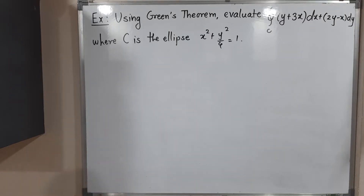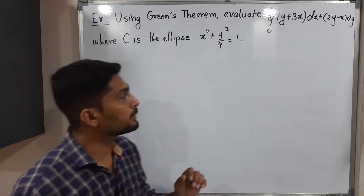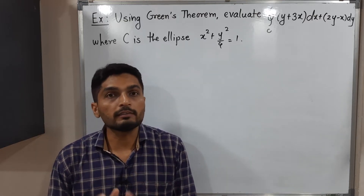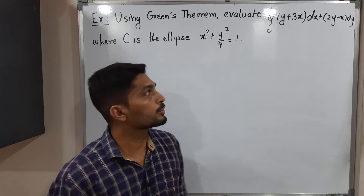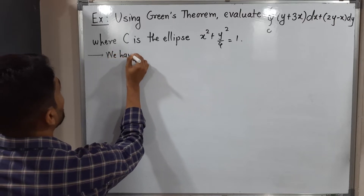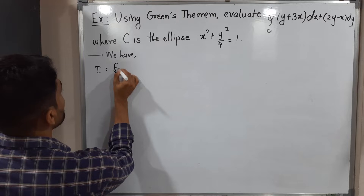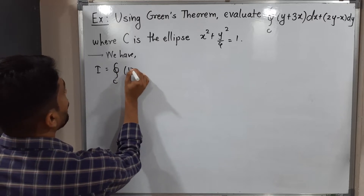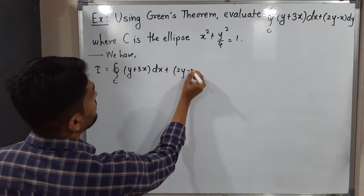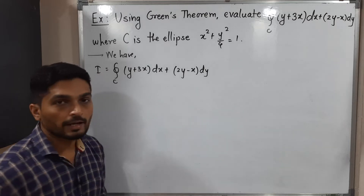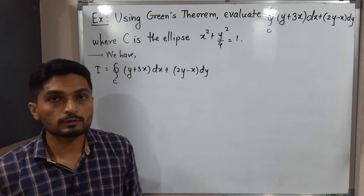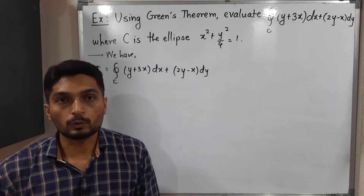Let us discuss this example. We have a line integral and we have to find its value using Green's theorem. Let us call the given line integral as I. The integral is I = ∮_C (y + 3x)dx + (2y − x)dy, where C is the ellipse x² + y²/4 = 1.